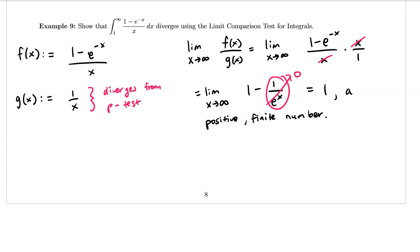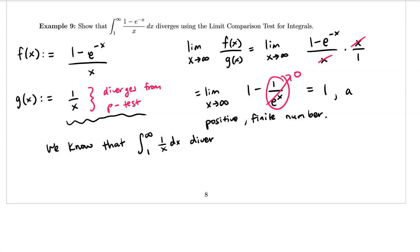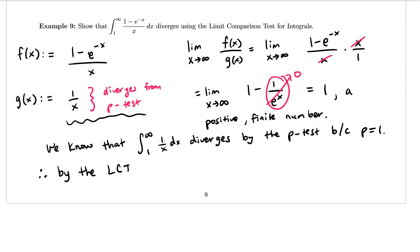Since our limit was a positive finite number, by the limit comparison test for integrals both integrals must converge or both must diverge. We already know from the p-test that the integral from 1 to infinity of 1 over x dx diverges because p equals 1. Therefore, by the limit comparison test for integrals, the integral from 1 to infinity of (1 minus e^(-x)) over x dx must also diverge.